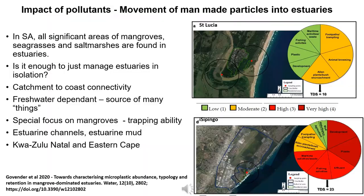The movement of pollutants requires a catchment to coast approach as estuaries are conduits that link different ecosystems. We focused on mangroves as their ability to trap particles is well established. In our study we set up a disturbance index to characterize the activities around our mangrove forests before analyzing them in the context of microplastic and metal data.